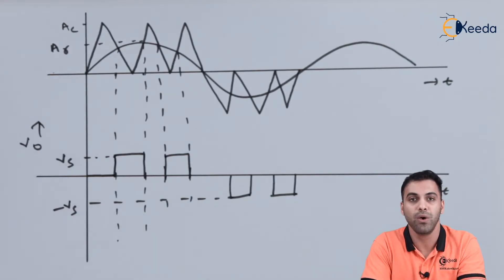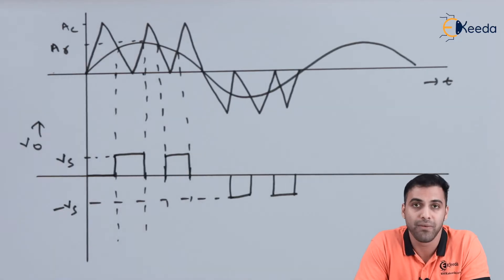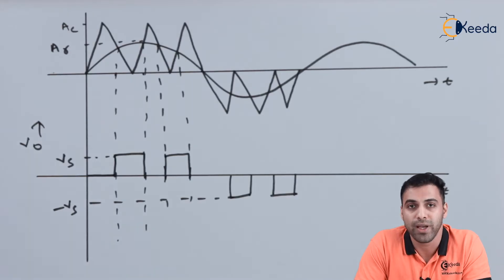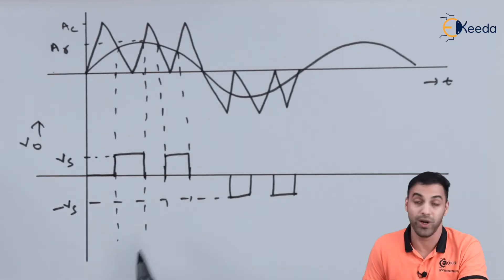So this is how we can control the sine wave or we can control the reference sine wave that we have taken as a reference wave. We can control the time period so that the width will be controlled and ultimately the output voltage we can control.